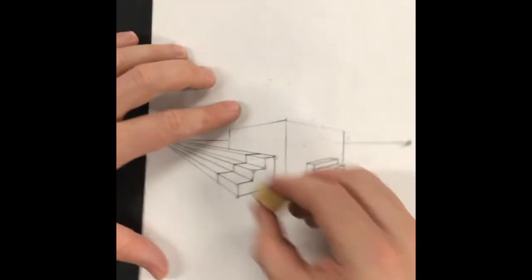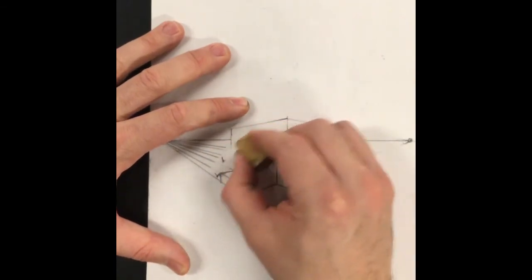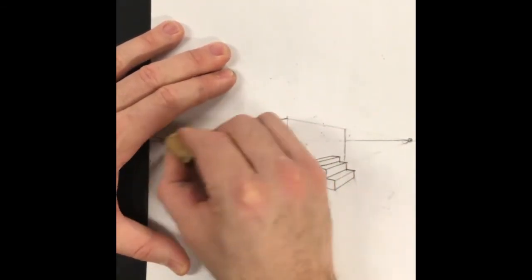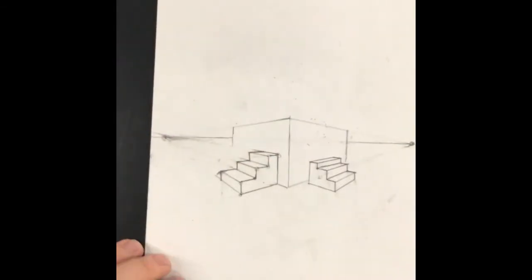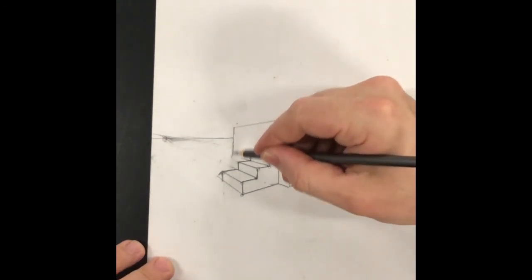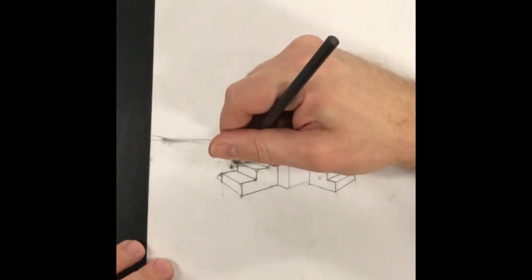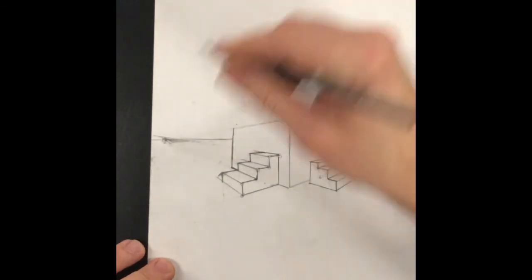We can erase all this extra stuff that we don't need, and we can put the side of this building back in right here where we can still see it from our earlier erased lines.